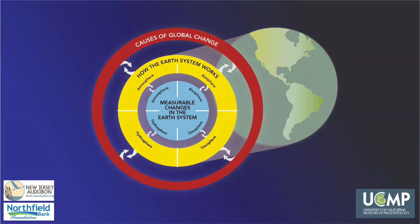We will now explore parts of the Earth system that we can measure over time to determine how fast and how much the Earth has changed. In the understanding global change framework, measurable changes are in the middle of the diagram, shown in blue. Studying past global change is essential for understanding and making predictions about global change today and will help us prepare for a sustainable future. There are an enormous number of aspects of the Earth system that can be measured, and here we'll consider just some of the most significant changes occurring around the world.